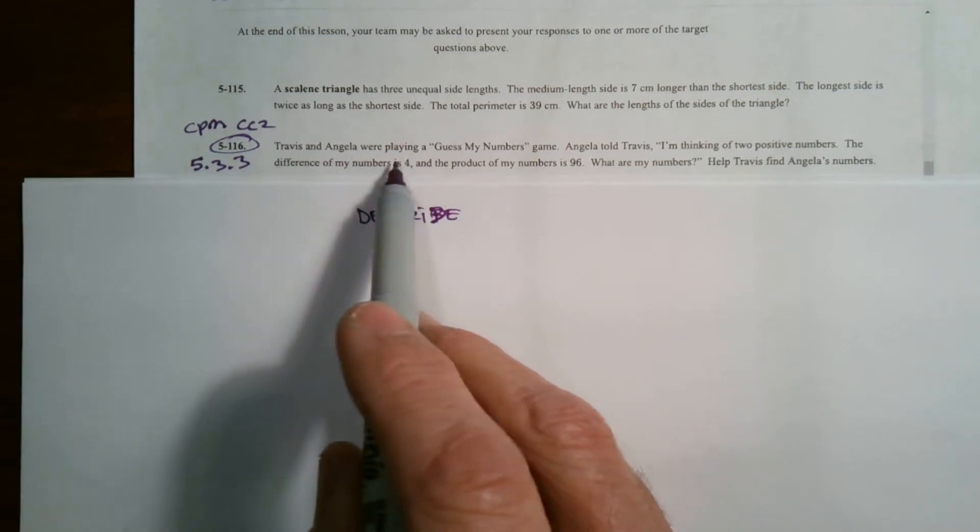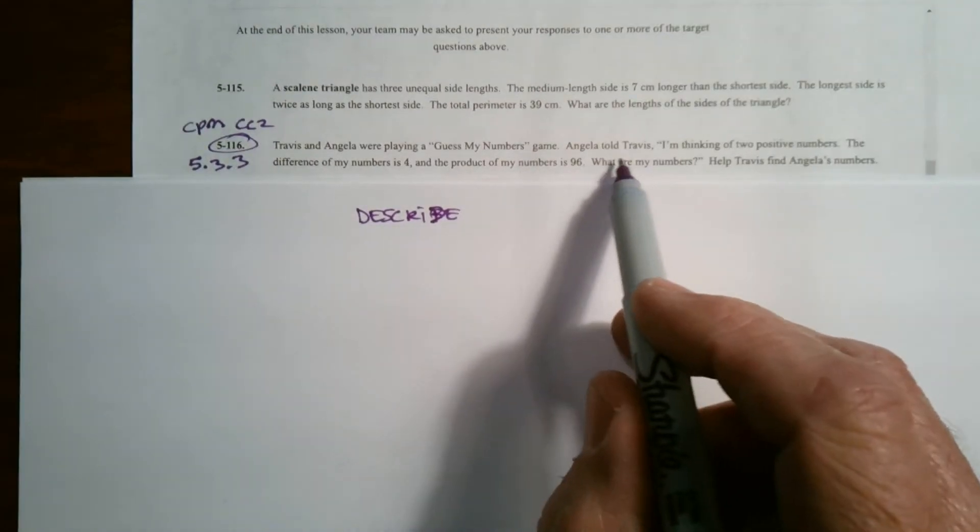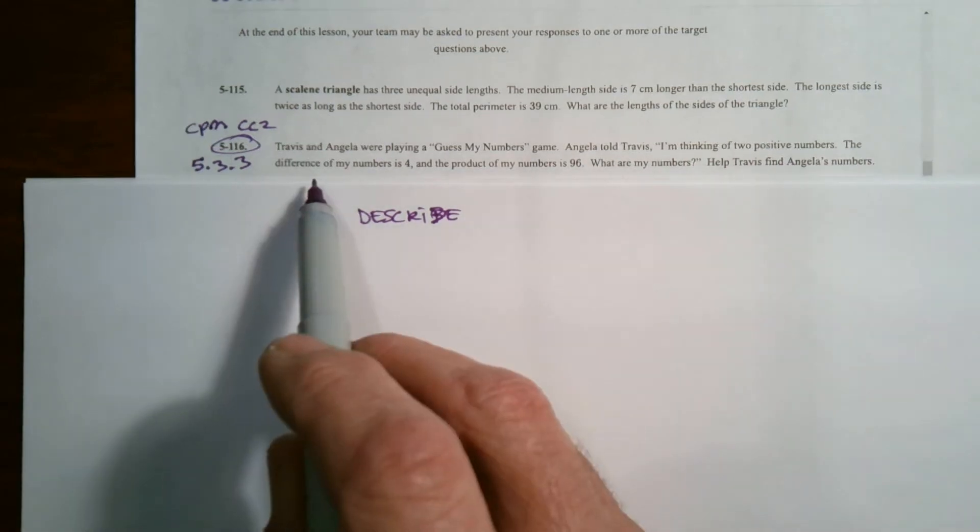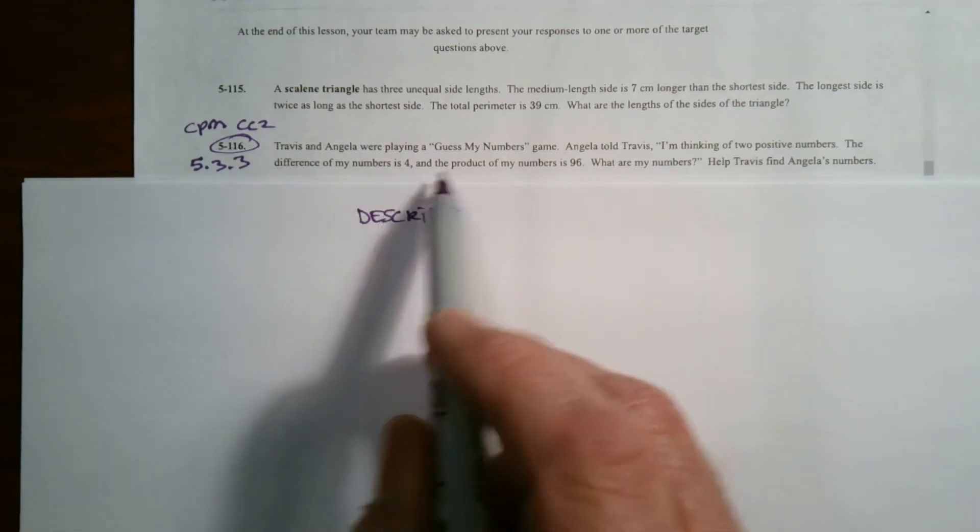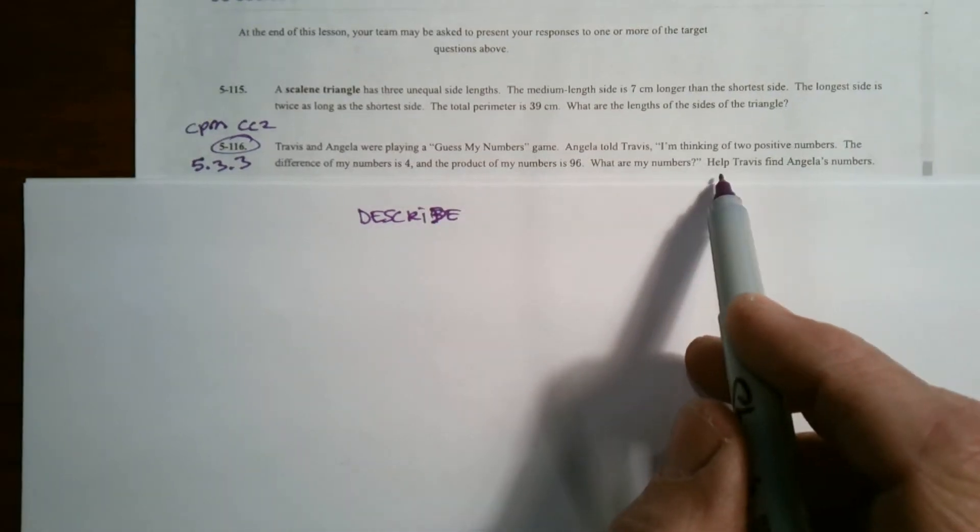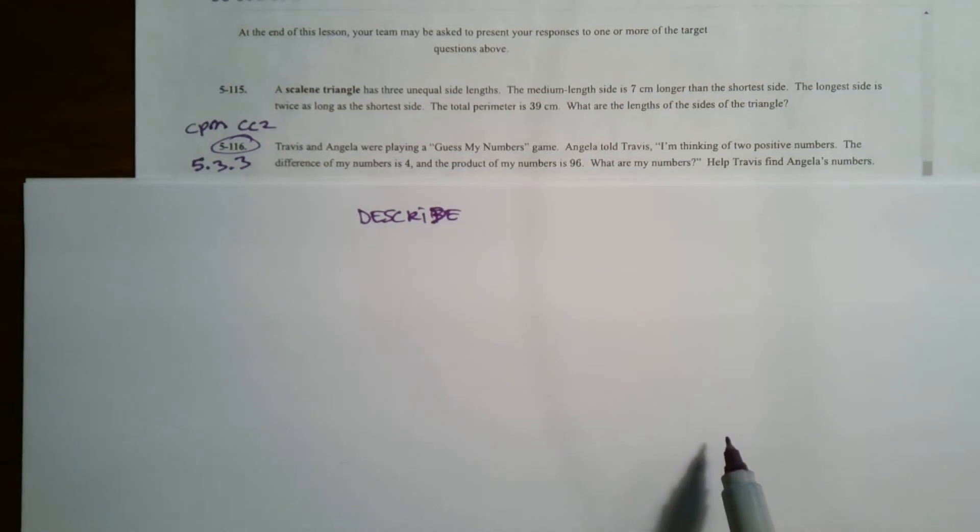So Travis and Angela were playing a guess my numbers game. Angela told Travis, I'm thinking of two positive numbers. The difference of my numbers is 4 and the product of my numbers is 96. What are my numbers? Help Travis find Angela's numbers.